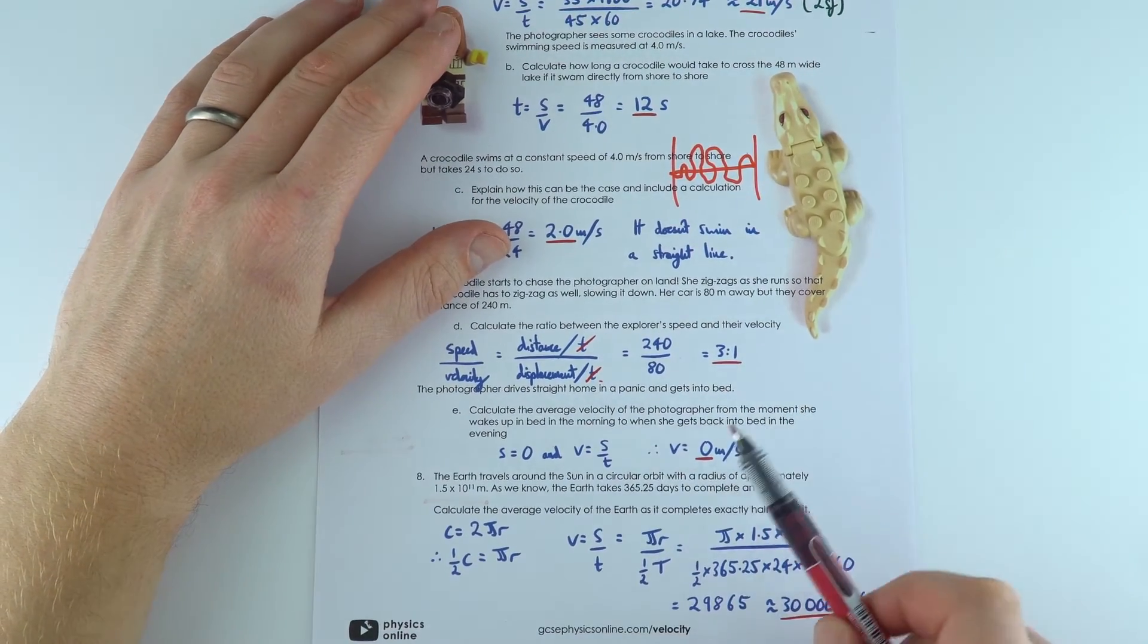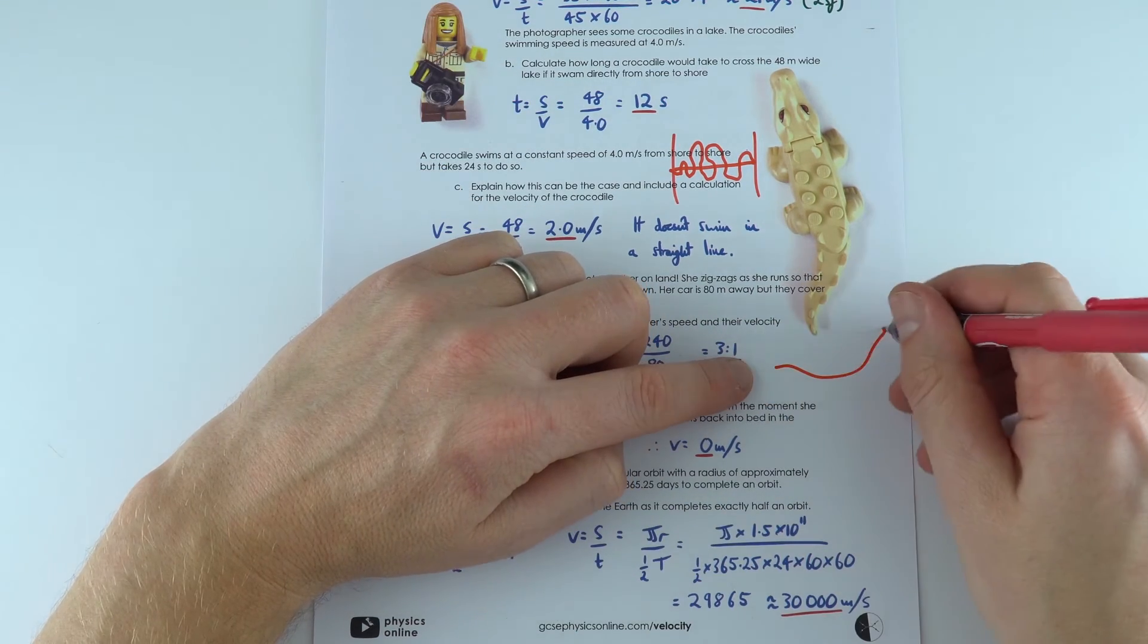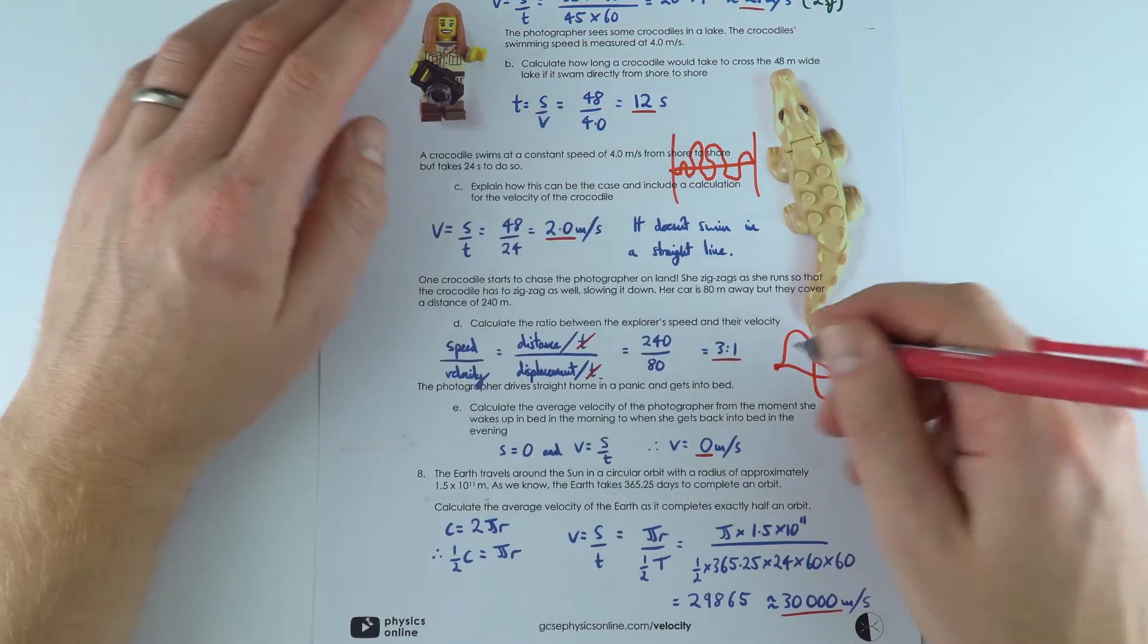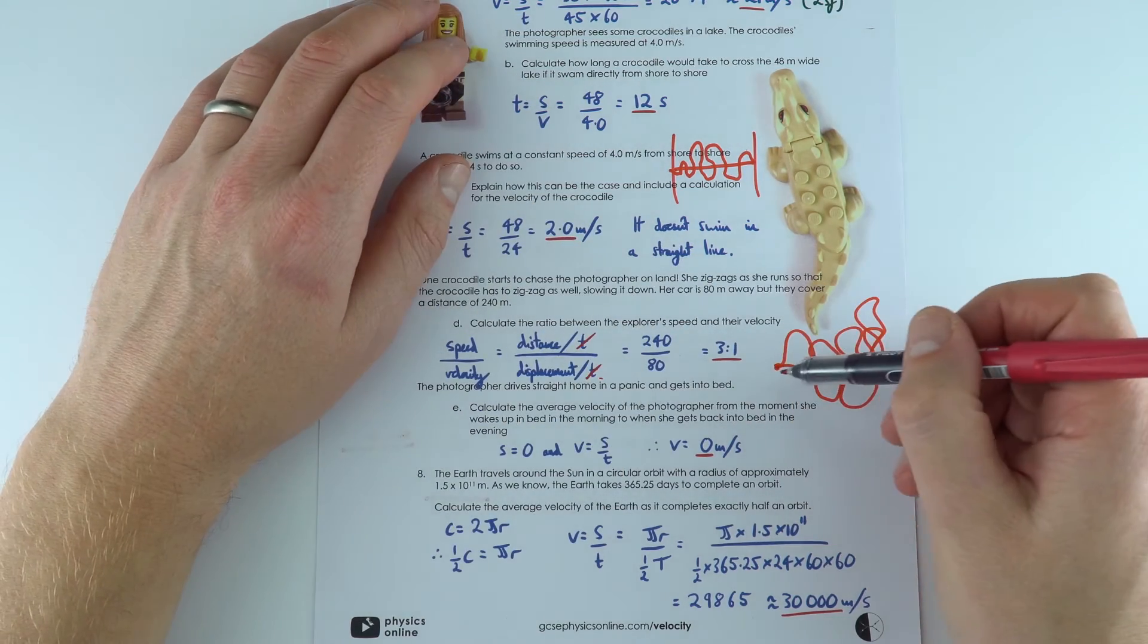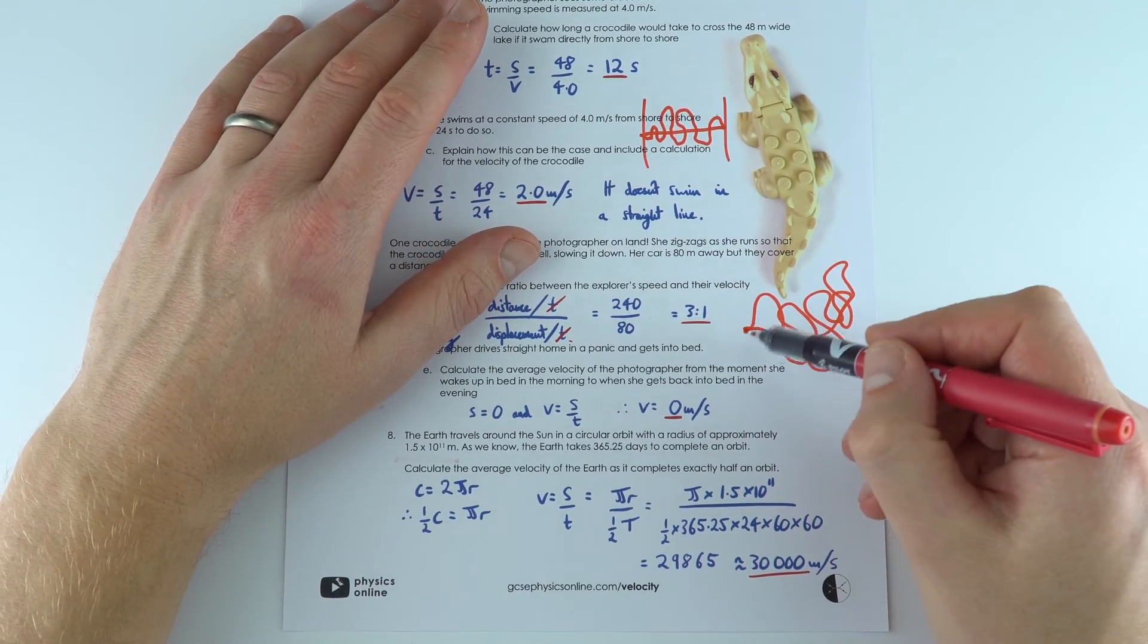They get into bed. What's their average velocity for the day? Well, if they started in bed, they went out, they did whatever they did, and then eventually, at the end of the day, they came back to where they started. Again, their displacement is zero, just like the swimmer in that previous question. And that means their average velocity is zero.